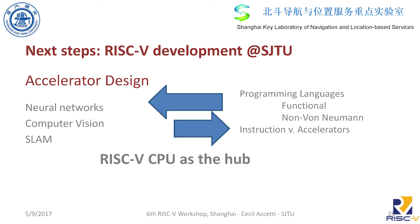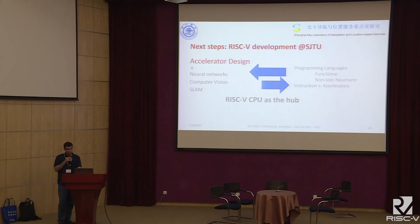We're focusing on accelerator design from the lab here — 10 steps from this building. We're focusing on neural networks, computer vision, and SLAM, and we're going to use RISC-V as a hub for all of these accelerators and research areas, which also involves programming language design and how to interface with these accelerators. The open ISA lets us do this, and we're going again with RISC-V as the main hub for our research.